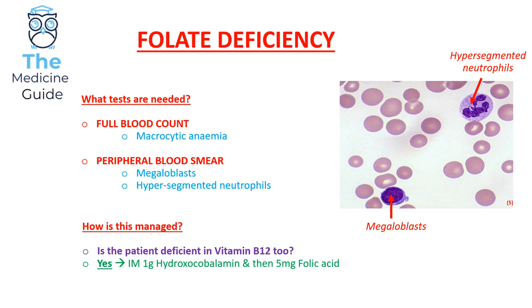If the patient has normal levels of vitamin B12 but low folate, we would simply need to replace the folate — offer five milligrams of folic acid.